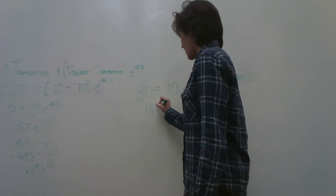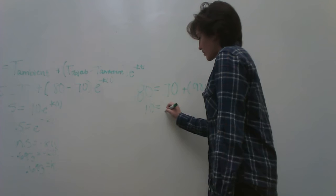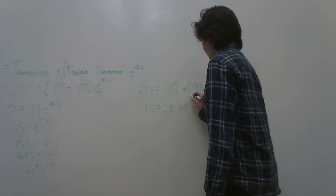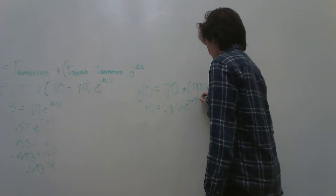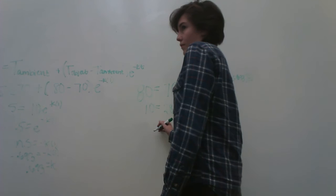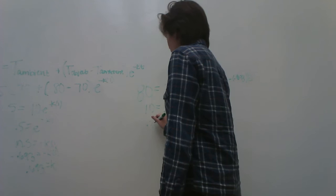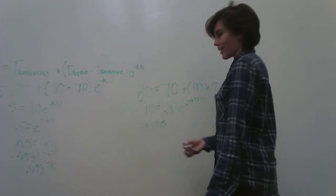And so from here you're going to do 80 minus 70, which is 10, equals 98.6 minus 70, which is 28.6, and that's going to be E raised to the negative 0.693 times T. From here you're going to divide out the 28.6, and from there you get 0.3934965.